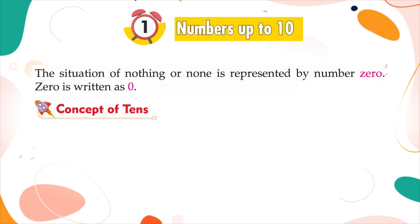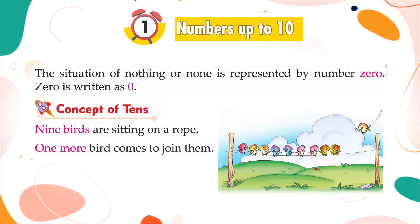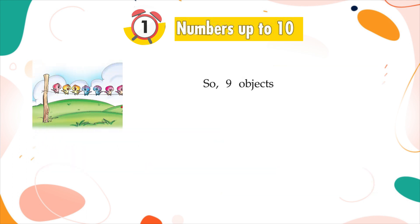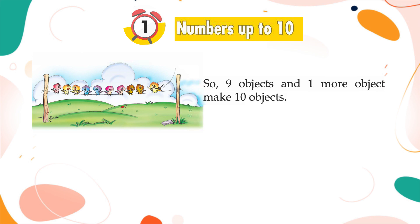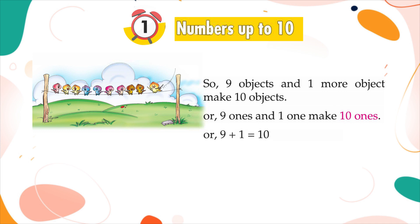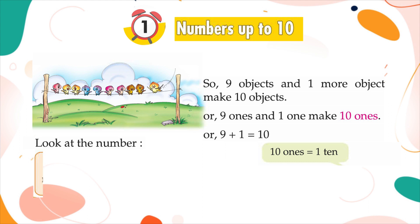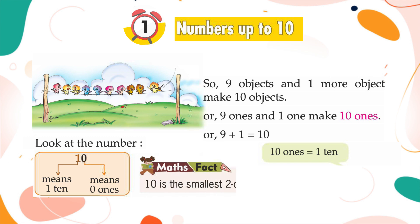Concept of tens. Nine birds are sitting in a row. One more bird comes to join them. Now they are in a group of ten. So, nine objects and one more object make ten objects. Nine ones and one make ten ones. Nine plus one equals ten. Ten ones equals one ten. One means one ten, zero means zero ones. Maths fact: ten is the smallest two-digit number.